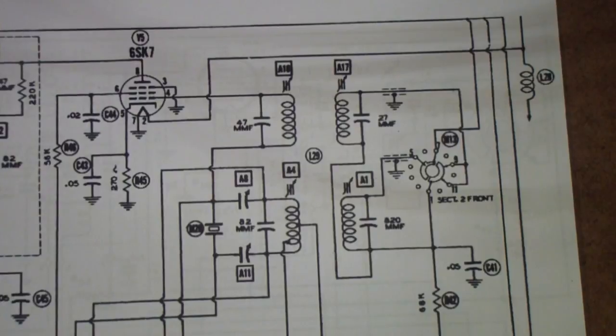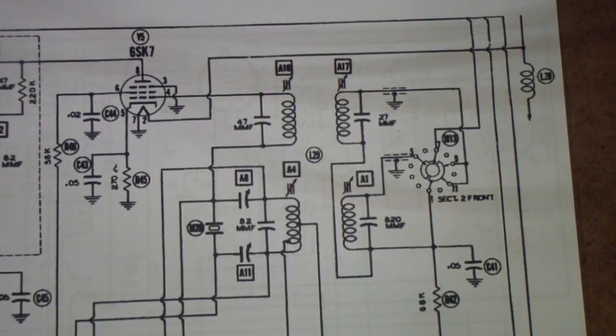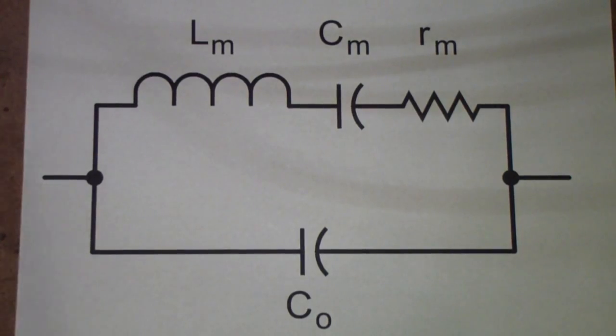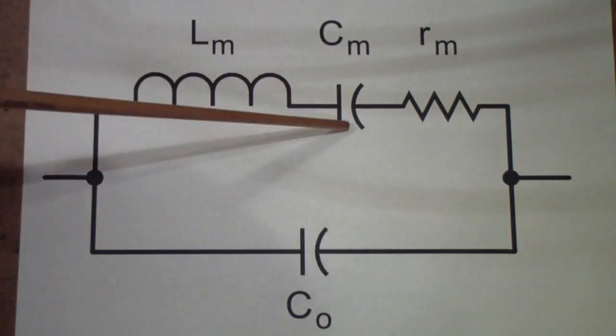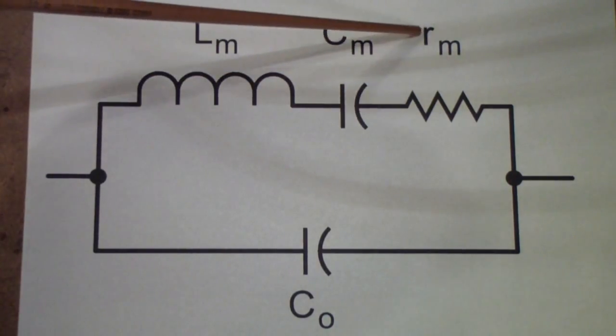In order to do that, we first have to look at the characteristics of crystals. This is an equivalent circuit of a crystal. There is a, and understand, this is only a representation. These things don't actually exist. There's no real coil in a crystal. But the motion of the crystal, that is a quartz crystal, is represented by an equivalent motional inductance, and that's what L sub M means. There also is an equivalent motional capacitance and an equivalent motional resistance.